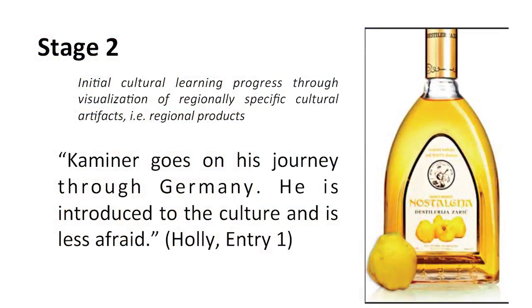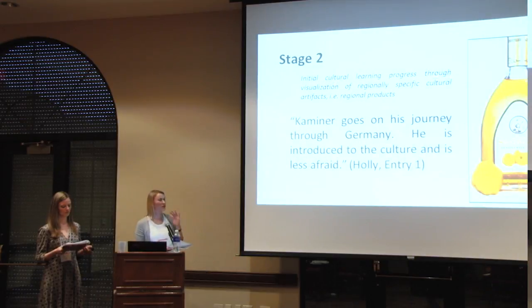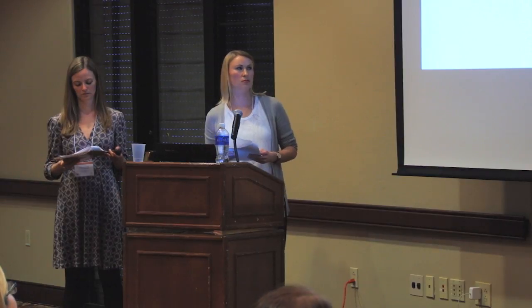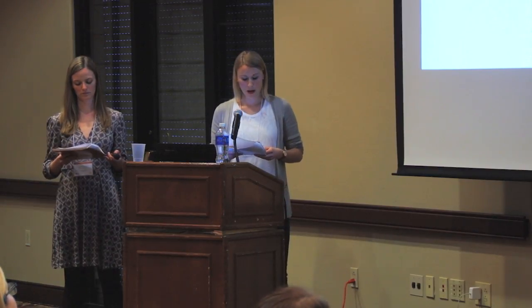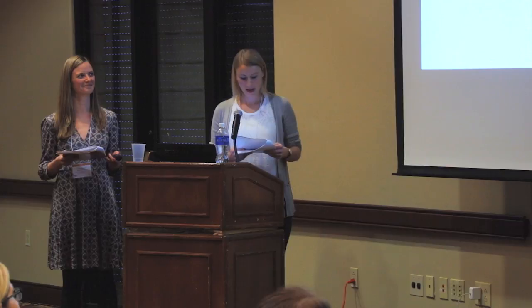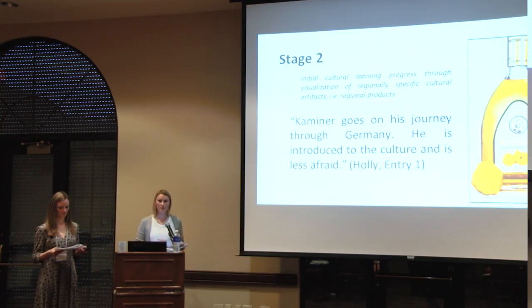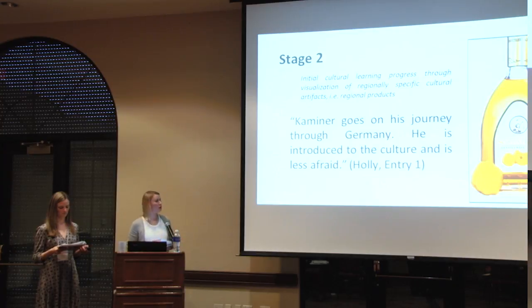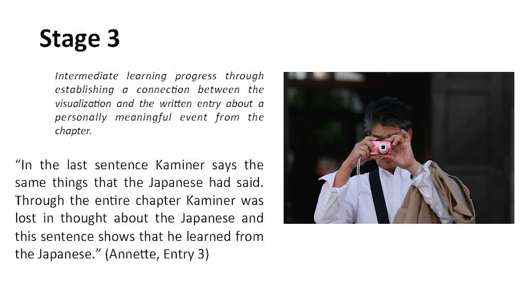Stage two shows initial cultural learning progress, because the visualization was of a regional product rather than a geographical location. We considered this a higher stage than posting a picture of the city in the title, since students were already required to mark the city on a map of Germany. Holly posted a picture of Quittenschnaps — a regional product of Weikersheim — and wrote that Kaminer goes on his journey through Germany, is introduced to the culture, and is less afraid. Again, there was no direct connection between the written entry and the picture, and the product was also a keyword from the title.